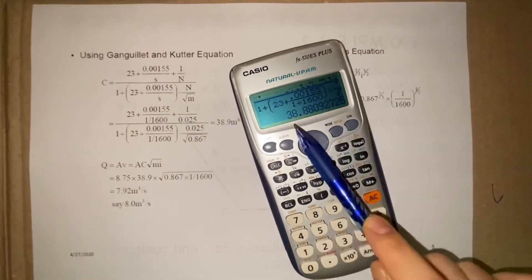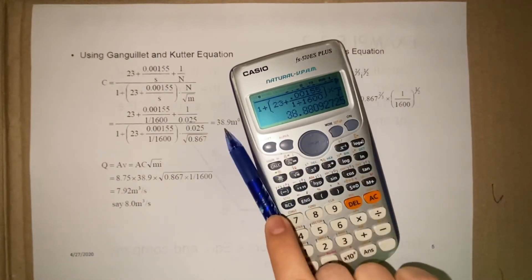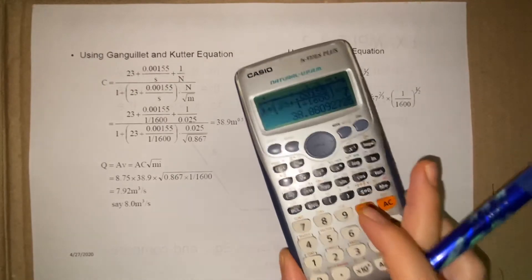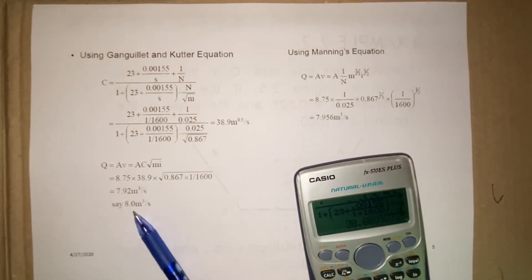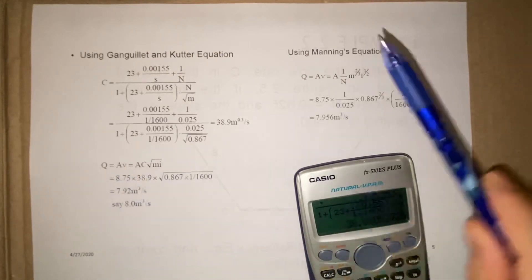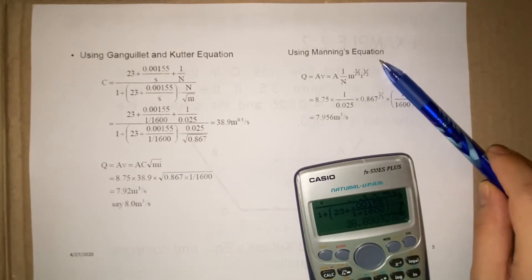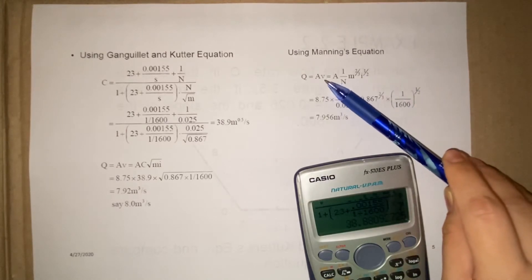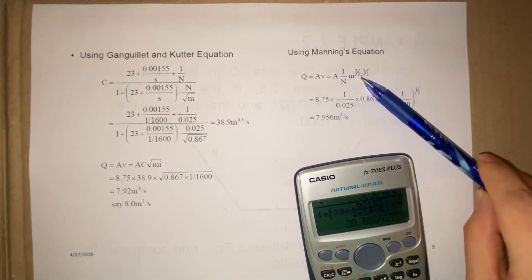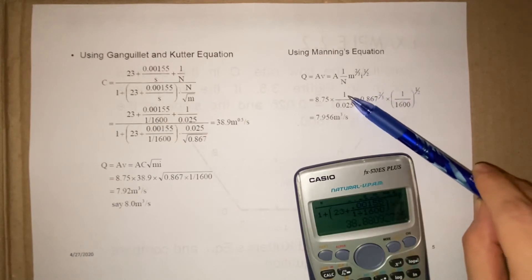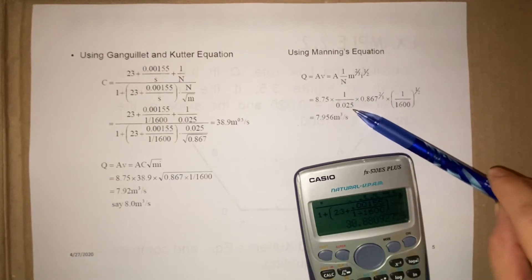Okay, so simple for using Ganguillet and Kutter's formula. And then use Manning's equation. We know that for Manning's equation, V is 1 over N times M to the 2/3 power times S to the 1/2 power. So N is 0.025.